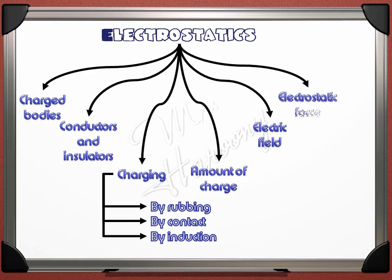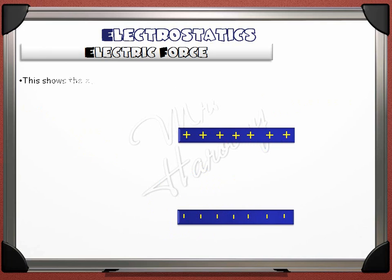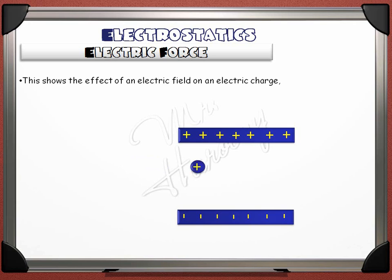This part talks about the electrostatic force between charged objects — the effect of an electric field on an electric charge. If a positively charged particle moves in an electric field between two oppositely charged plates, the particle will be repelled from the positive plate and attracted to the negative plate. The particle moves in a straight line before entering the electric field. Inside the field, it takes a curved path towards the negative plate and away from the positive plate. As the particle exits the electric field, it continues its path in a straight line.